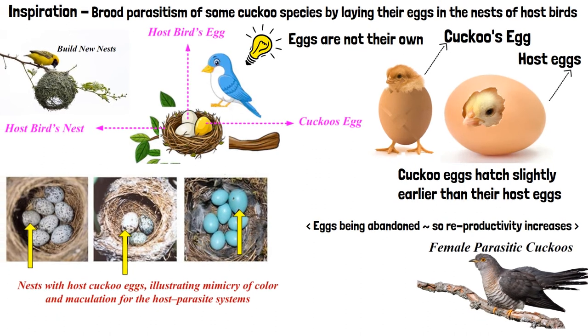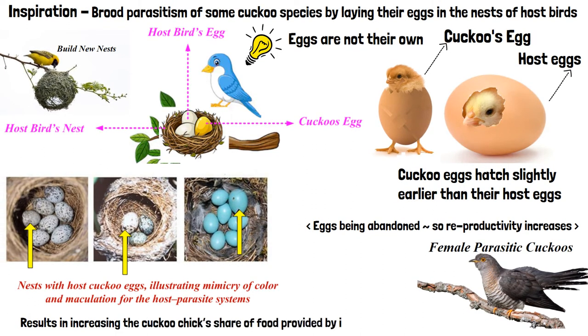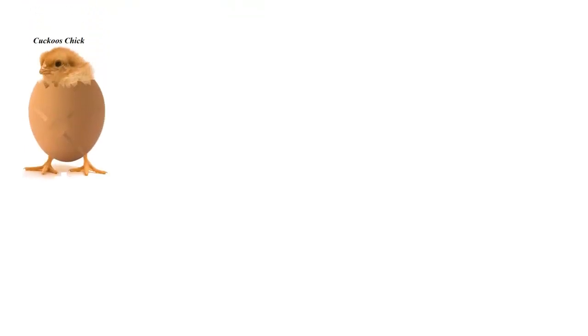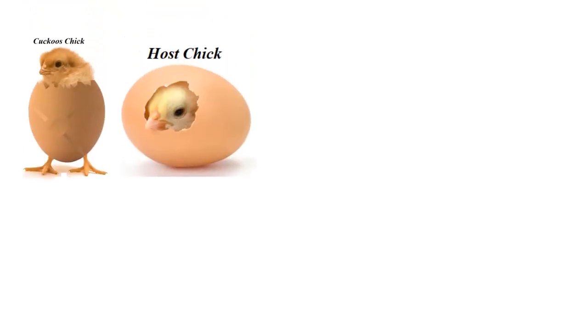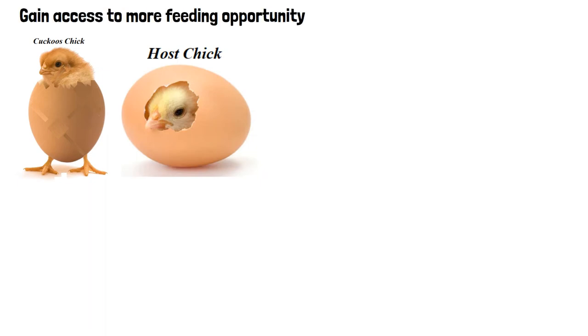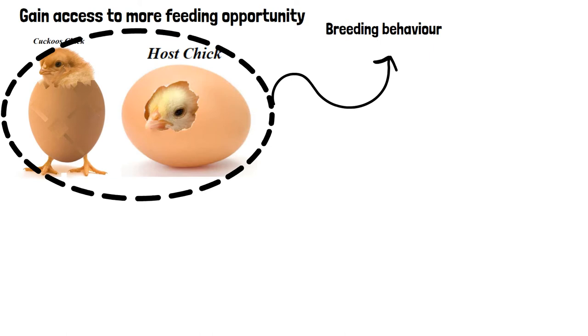This action results in increasing the cuckoo chick's share of food provided by its host bird. Moreover, studies show that a cuckoo chick can imitate the call of host chicks to gain access to more feeding opportunities. The breeding behavior of the cuckoo can be applied to various optimizations.